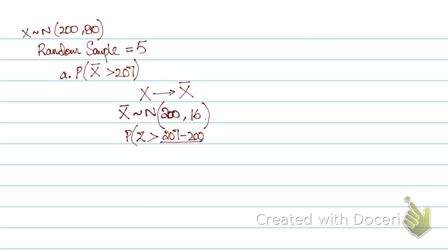And now we can find probability of X greater than 207. That is Z greater than 207 minus 200 upon sigma over root n. That is root of 16. That is 4. And then it's the same solving through normal distribution and calculating the probability.